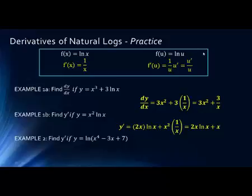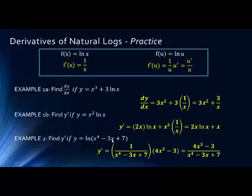The last part uses the chain rule — we have the natural log of another function. Here u equals x to the fourth minus 3x plus 7. The derivative of the outer, which is the natural log, gives us 1 over the argument — so 1 over (x⁴ - 3x + 7) — times the derivative of the inner, which is 4x³ minus 3. Derivative of the outer is 1 over the argument, times the derivative of the inner.